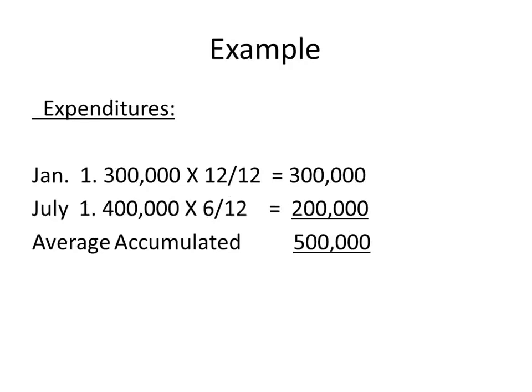So let's see what that means here, as an example. So let's say, on January 1st, I incurred $300,000 in expenditures that I put through my loan. My loan's going to now go up by $300,000. So for 12 out of 12 months, I have $300,000 of debt from this construction.